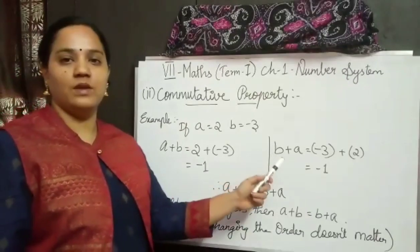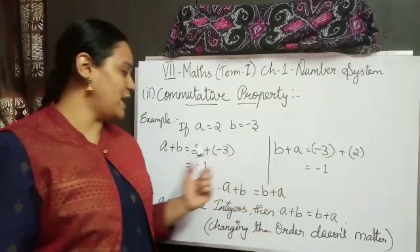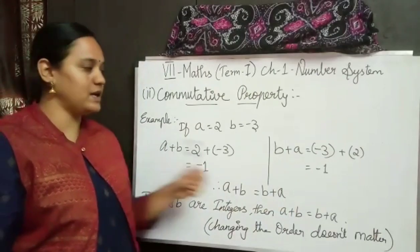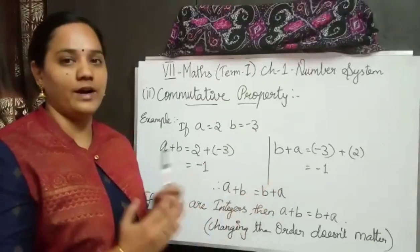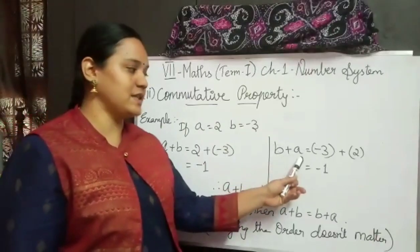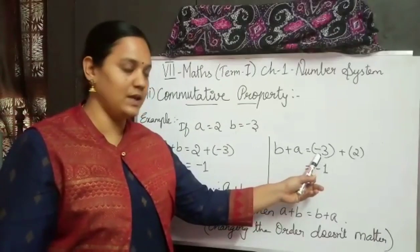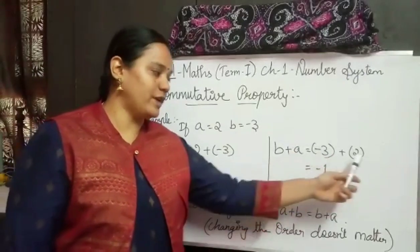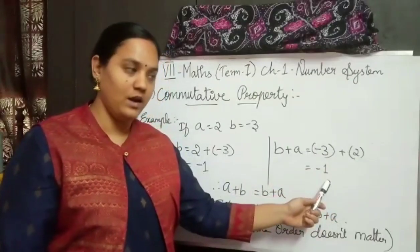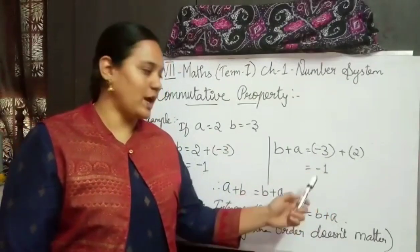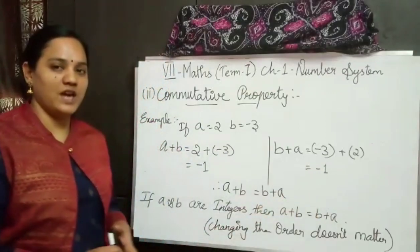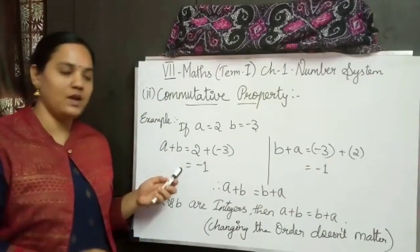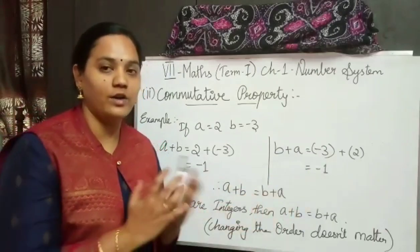Next I found out the value for b plus a. I am changing the order of this addition. Here I added a plus b and here I found out b plus a. So b plus a is equal to minus 3 plus 2. Now we have different sign, so we have to subtract. Subtracting I got the answer as 1, and the greatest number sign is minus, so I have written minus 1. I have changed the order of adding two integers.